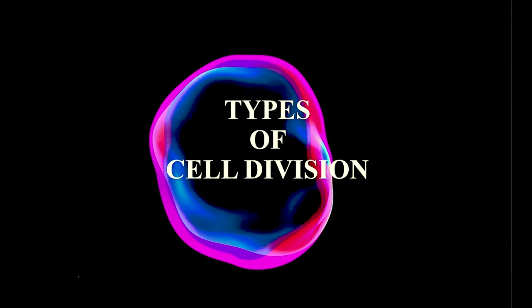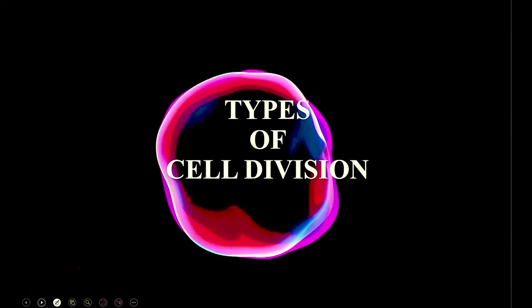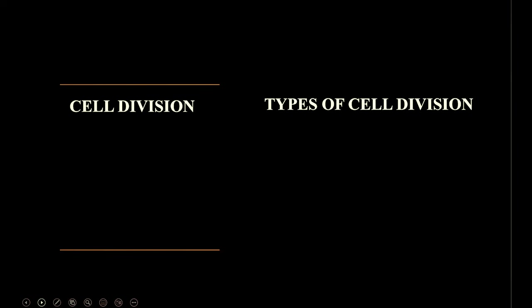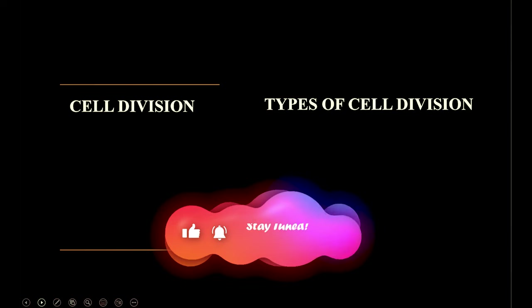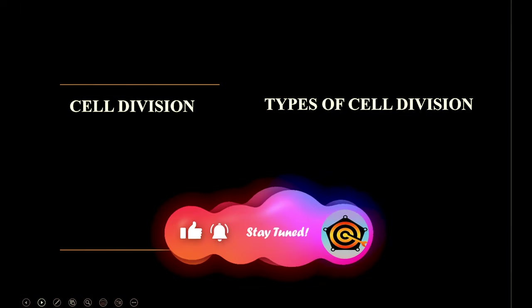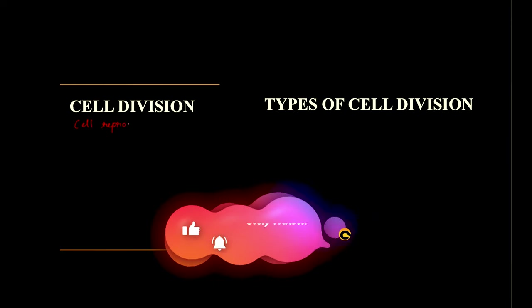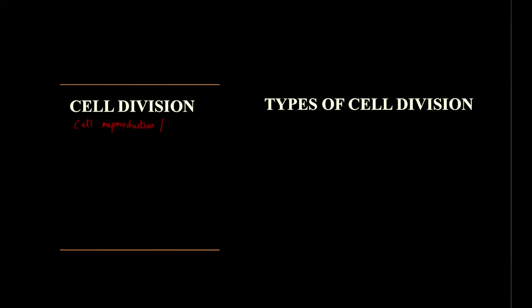Today we are going to discuss about types of cell division. Cell division is also called as cell reproduction and also cell multiplication.